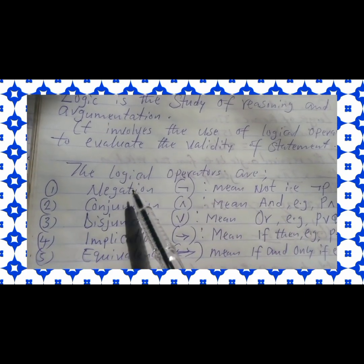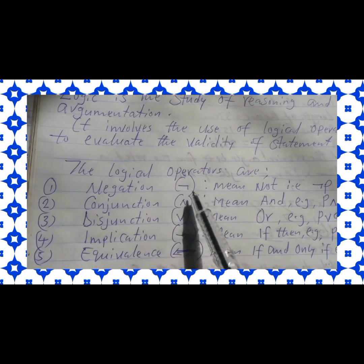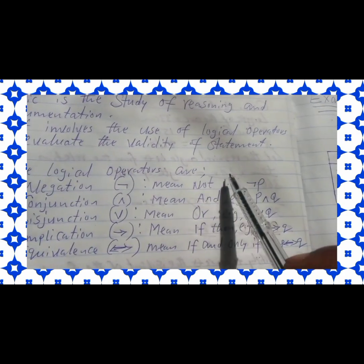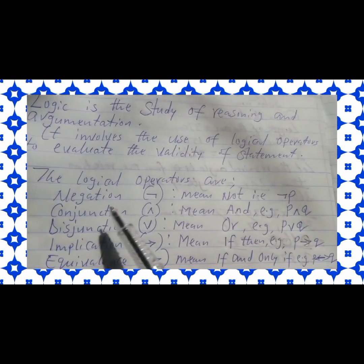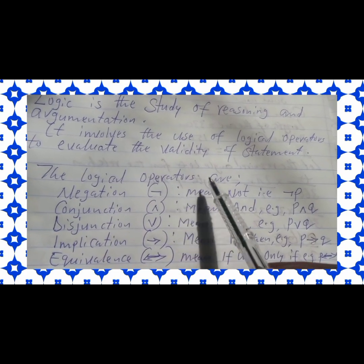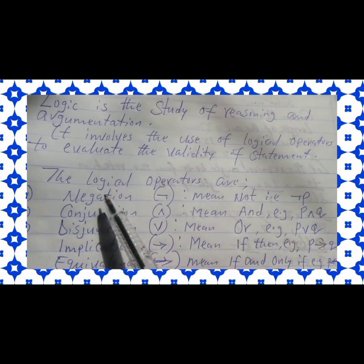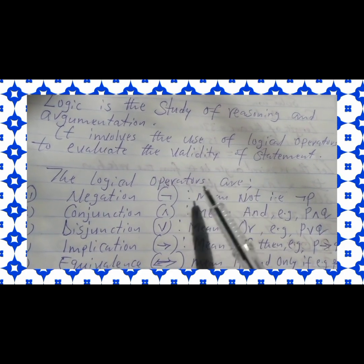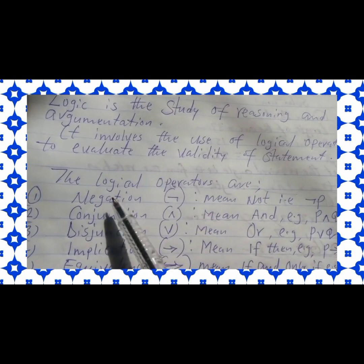The logical operators are: we have the negation, which is symbolized by this symbol — it's called negation and it means 'not.' When you see this symbol, that means not — that is the opposite. The negation of p simply means it's not p. It's the opposite of the particular thing we are considering. That is what negation means, and this is the symbol of negation.